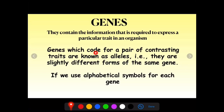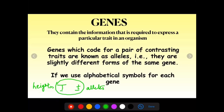Genes contain information required to express a particular trait in an organism. Genes that code for a pair of contrasting traits are known as alleles — they are slightly different forms of the same gene. So when we say capital T or small t, these are alleles. Capital T and small t are the two alleles of the gene for height. We use alphabetical symbols: R for round, small r for wrinkled; Y for yellow, small y for green. These are alleles of the seed shape and seed colour genes respectively.